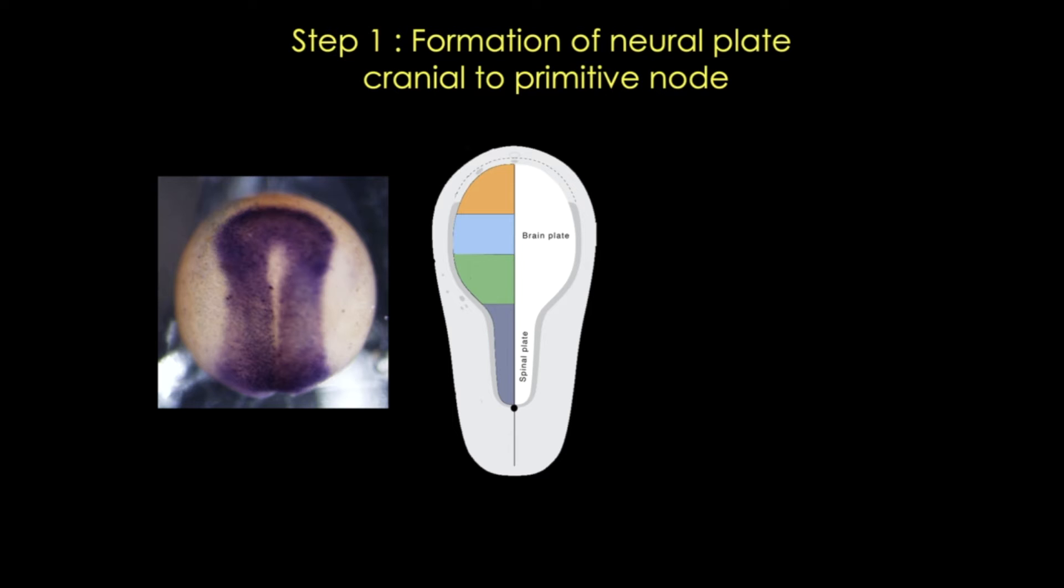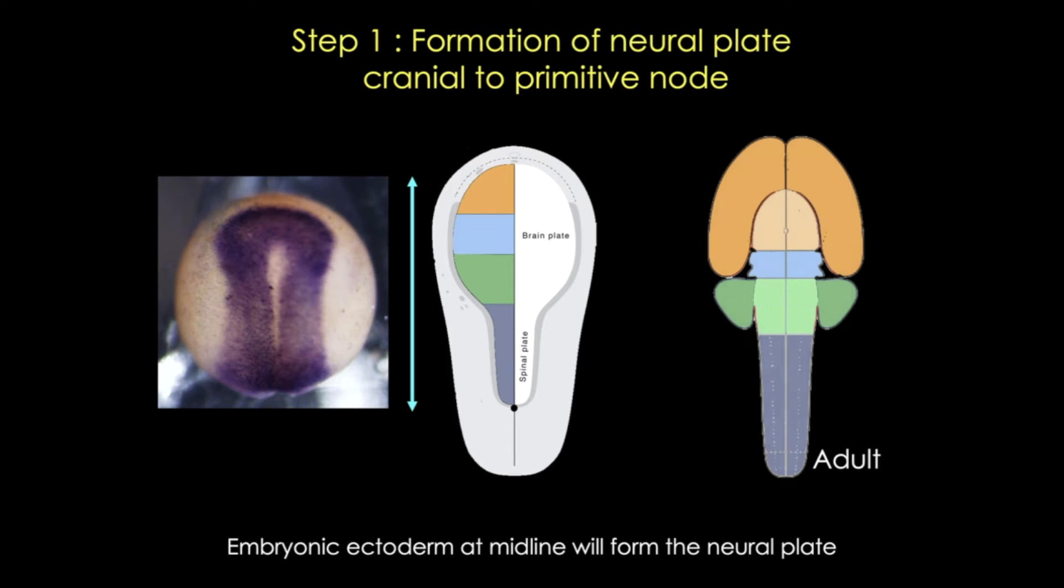The neural plate extends from the oropharyngeal membrane to the primitive node. We know from experiments in model organisms, fate mapping experiments, that the basic organization of the central nervous system is determined even at these very early stages. This area on the left, the brain plate, actually predicts the organization of the adult brain, and that more caudal one-third of the plate will form the spinal cord.